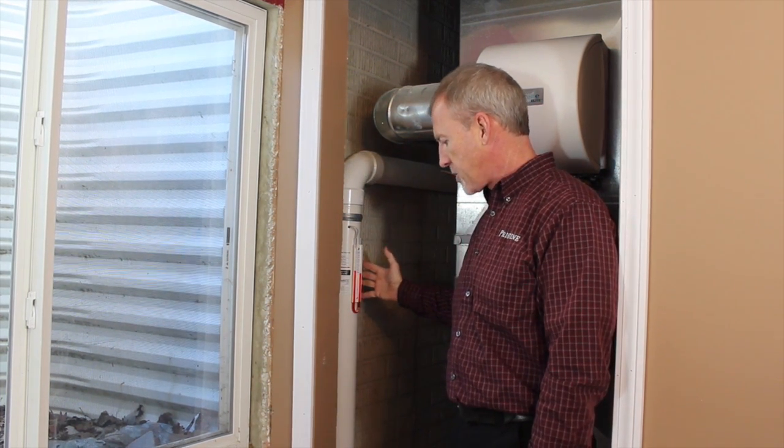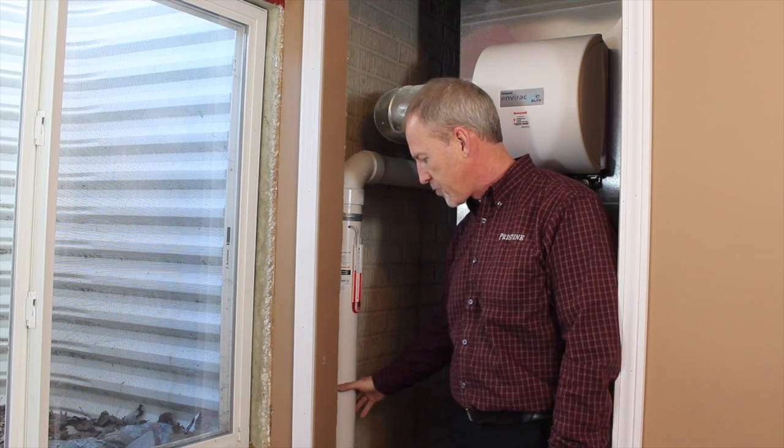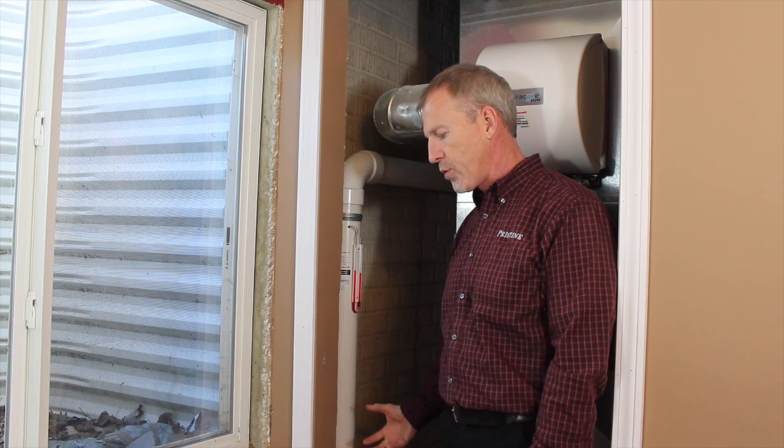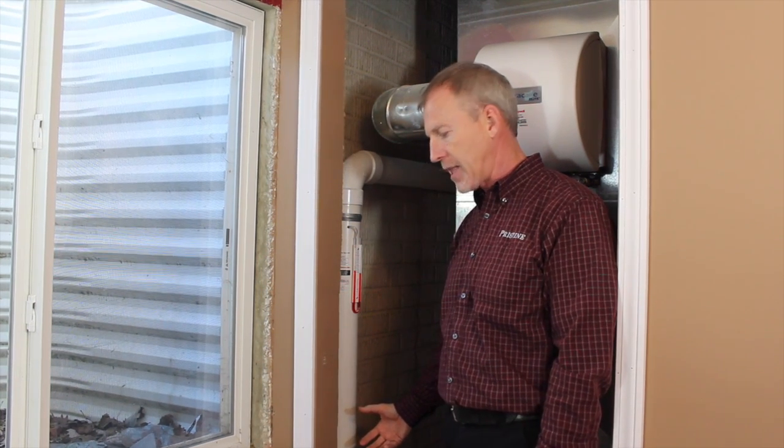The portion of it in the basement is going to be the 3-inch PVC pipe that goes into the concrete floor that allows it to pull the air from underneath the concrete slab.